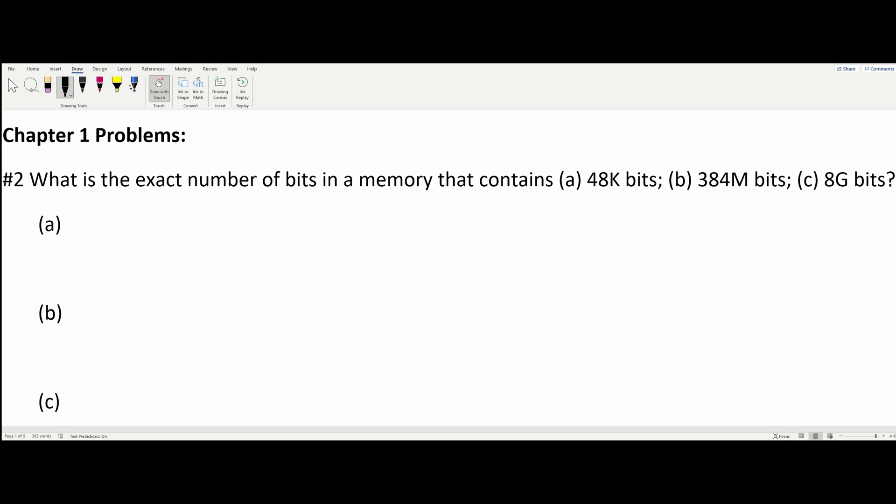In solving for this, we're just going to start with A first. 1K we know to be equal to 1000. However, with bits, it's not just 1000. When we're dealing with bits, we always have base 2.